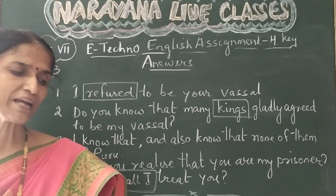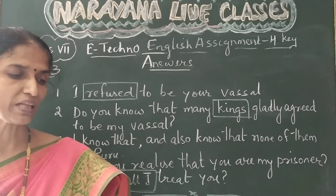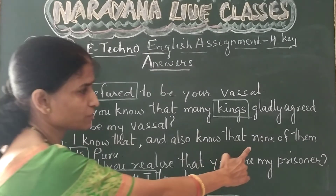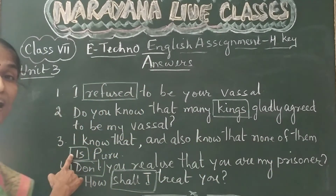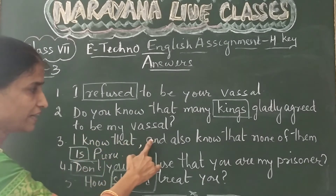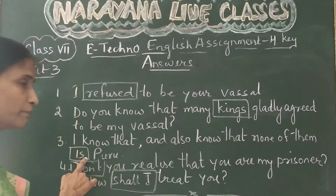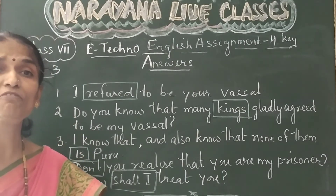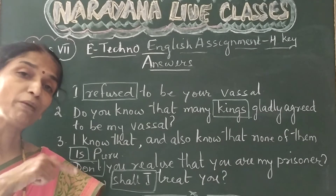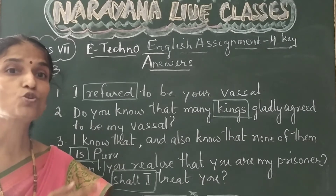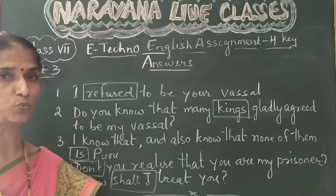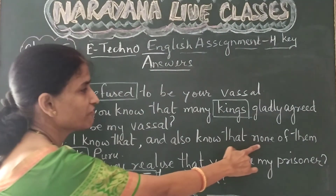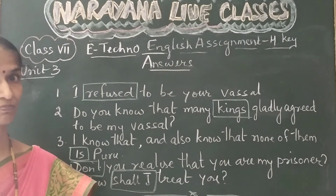Then the third sentence: 'I know that, and I also know that none of them are Puru.' The mistake is with the word 'are.' 'None of them' should be followed by the singular be-form, which is 'is,' but in the sentence we are given 'are.' So none of them is Puru. We should use the singular be-form of the verb when we have 'none,' 'neither,' or 'nor.'